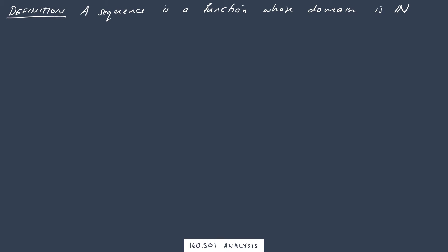The way that maybe you might be more used to thinking of a sequence is as an ordered list of real numbers. So for example a sequence might be 1, 1 half, 1 third, 1 quarter, etc.